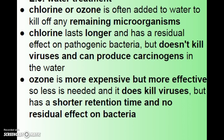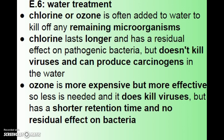For removing remaining organic material in the tertiary step, chlorine is usually used. Ozone can also be used and will kill any remaining microorganisms. Chlorine is preferred because it lasts longer and has a residual effect on pathogenic bacteria — it sticks around and does its job longer. The downside is it doesn't kill viruses and has been known to occasionally produce carcinogens. Ozone is more expensive and does kill viruses, and is more effective initially, but has a shorter retention time and no residual effect on bacteria. Most cities in the United States use one of these to remove remaining organics.